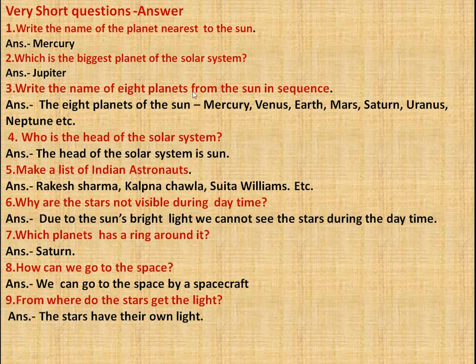Write the names of the 8 planets from the sun in sequence. The 8 planets of the solar system are: Mercury, Venus, Earth, Mars, Saturn, Neptune, etc.